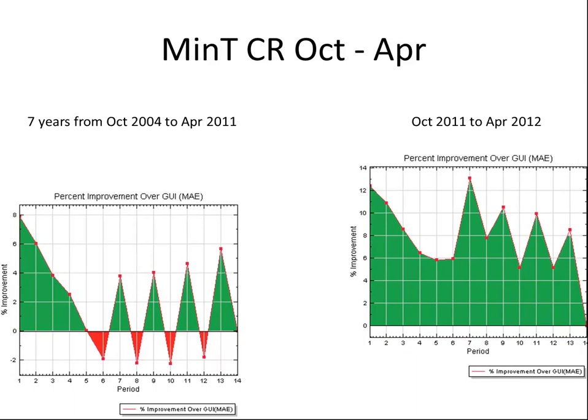Now we go to min temperature. You can see that there was a fairly significant advantage of MEX MOS over our forecast on the order of about two percent. And now in the past year, you're talking about anywhere from five to eight percent improvements over guidance.